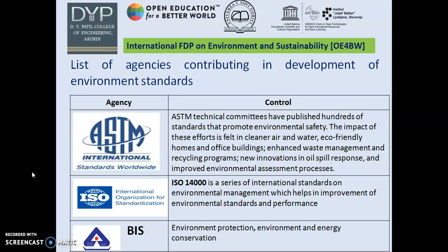The second agency is ISO — the International Organization for Standardization. ISO 14000 is a series of international standards on Environmental Management which helps in improvement of environmental standards and performance. The third one is BIS, the Bureau of Indian Standards, which promotes environmental protection and energy conservation.